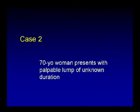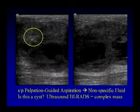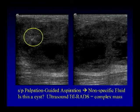Case two: a 70-year-old woman who presents with a palpable lump of unknown duration. Age is the number one predictor of malignancy aside from gender — cancer increases as the woman gets older. This patient is 70 and presents with a fairly large mass. Ultrasound was performed.